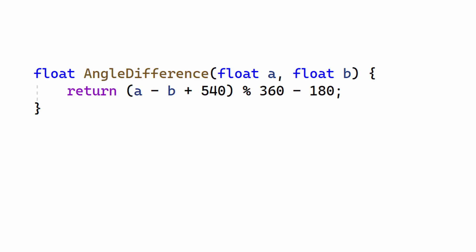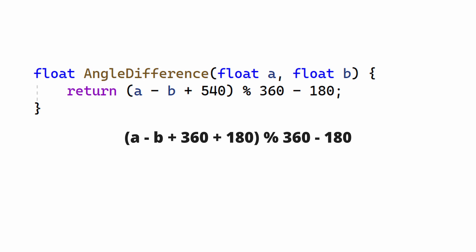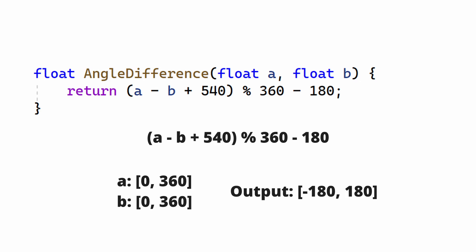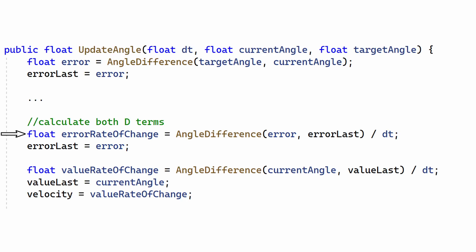We add a new function, angle_difference. The difference between two values is A minus B. Degrees of rotation are a modular system, so we take the difference modulo 360. The modulo operator doesn't work if A minus B is negative, so we add 360 inside the parentheses. This returns values in the range 0 to 360, so we remap the angles by adding 180 inside the parentheses and subtracting 180 after the modulus — we can simplify this to 540. Now the output range is -180 to 180. We add a new function, update_angle, to the PID class for handling rotating systems. The error, error rate of change, and value rate of change are calculated using the new angle_difference function. All other PID logic remains the same. Our PID controller can now correctly handle rotating systems.